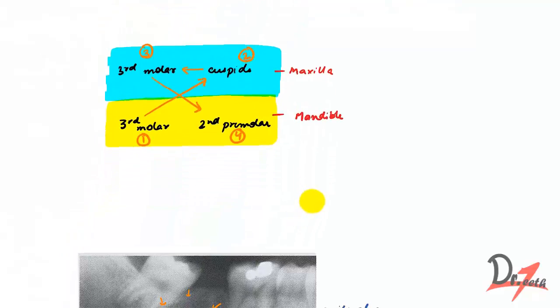So most often involved are the mandibular third molar, because this is the tooth which is most often impacted, and then we have the maxillary cuspid, and then we have the maxillary third molar, and then we have the mandibular second premolar.